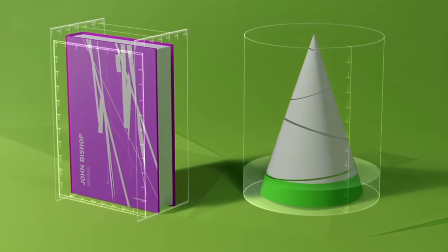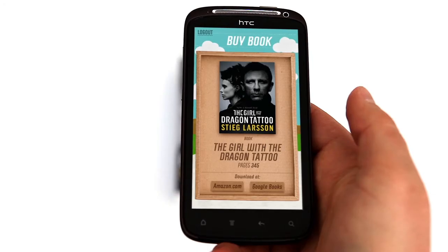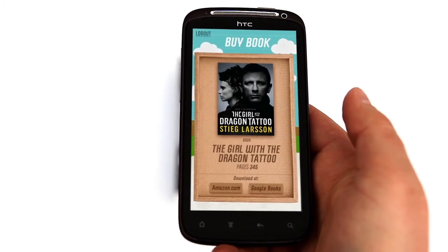The app will then show how much lumber it took to produce the book and offers to buy an electronic version instead.